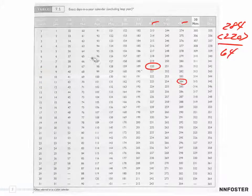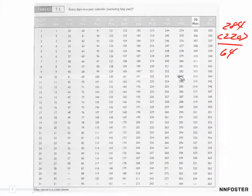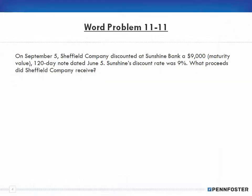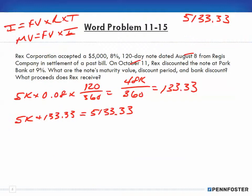64 days had passed, right? But the note is a 120-day note, so we subtract this 64 days, and that tells us 56 days have passed, which is the discount period.